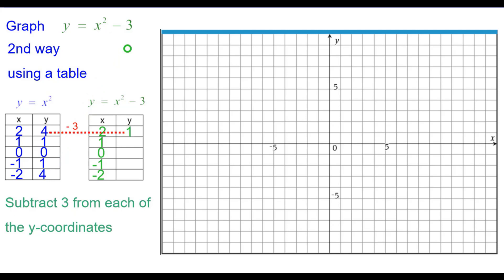So 4 minus 3 will be 1. And that point 2 comma 1 is plotted there. 1 minus 3 is negative 2. 1 comma negative 2 is plotted. 0 minus 3, 0 negative 3. 1 minus 3 back to negative 2, negative 1 negative 2. And 4 minus 3 is 1, negative 2 comma 1.